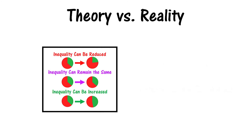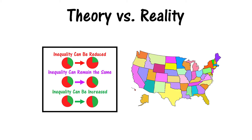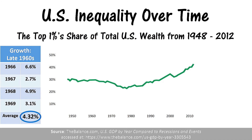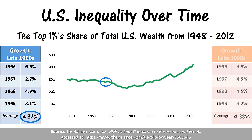This graph shows how wealth inequality has changed over time, as indicated by the top one percent share. We can see that the average growth rate of about 4.3 percent in the late 1960s coincided with a slight reduction in inequality, whereas the approximately 4.3 percent growth in the late 1990s coincided with an increase in inequality.